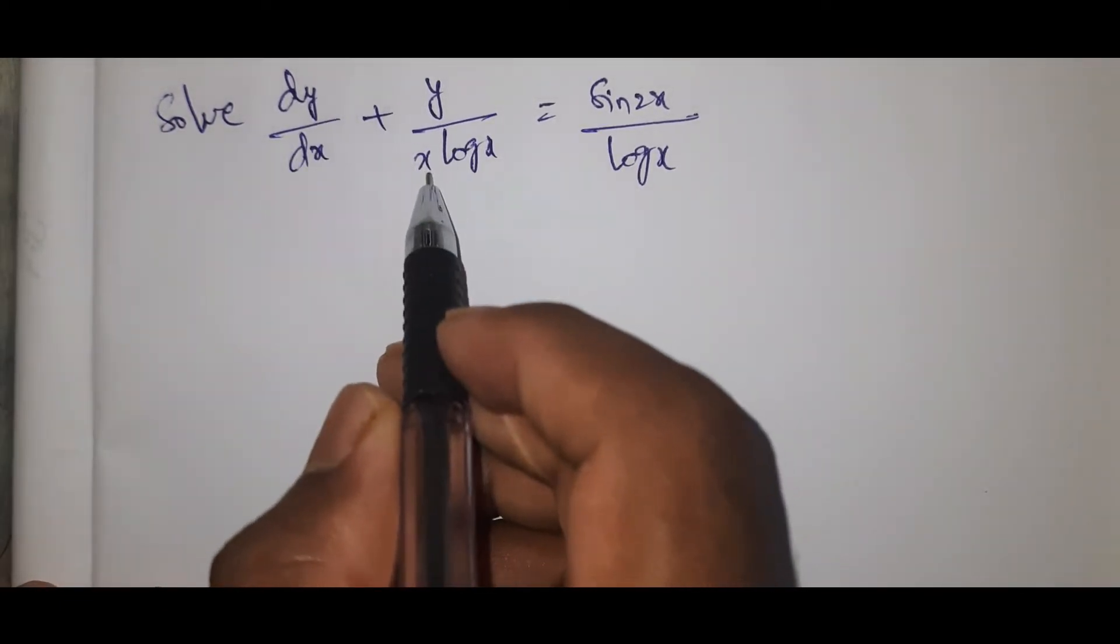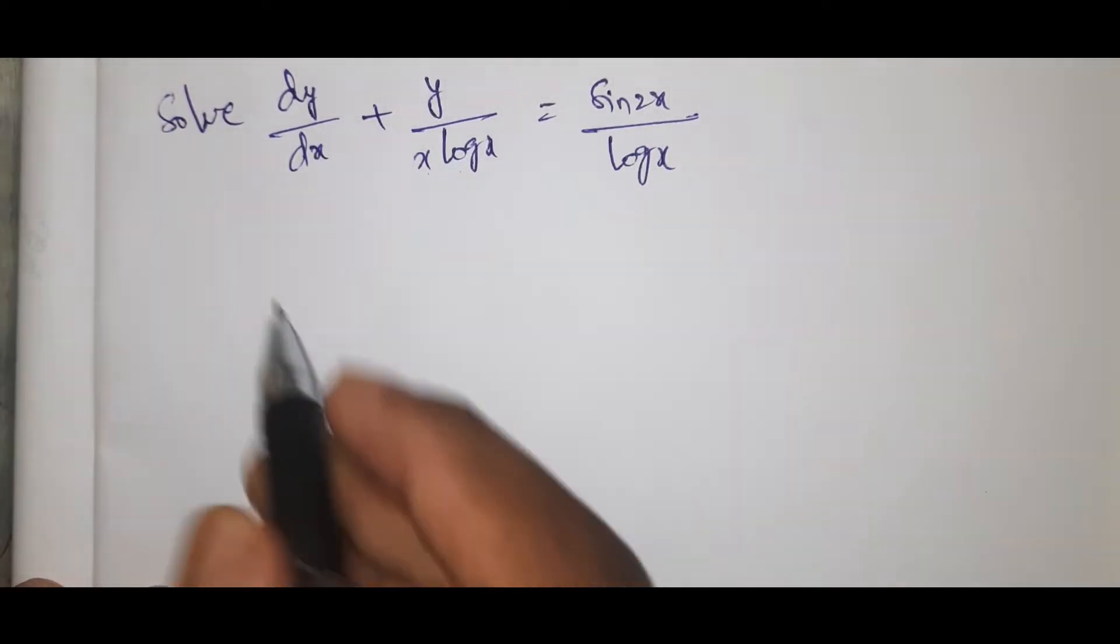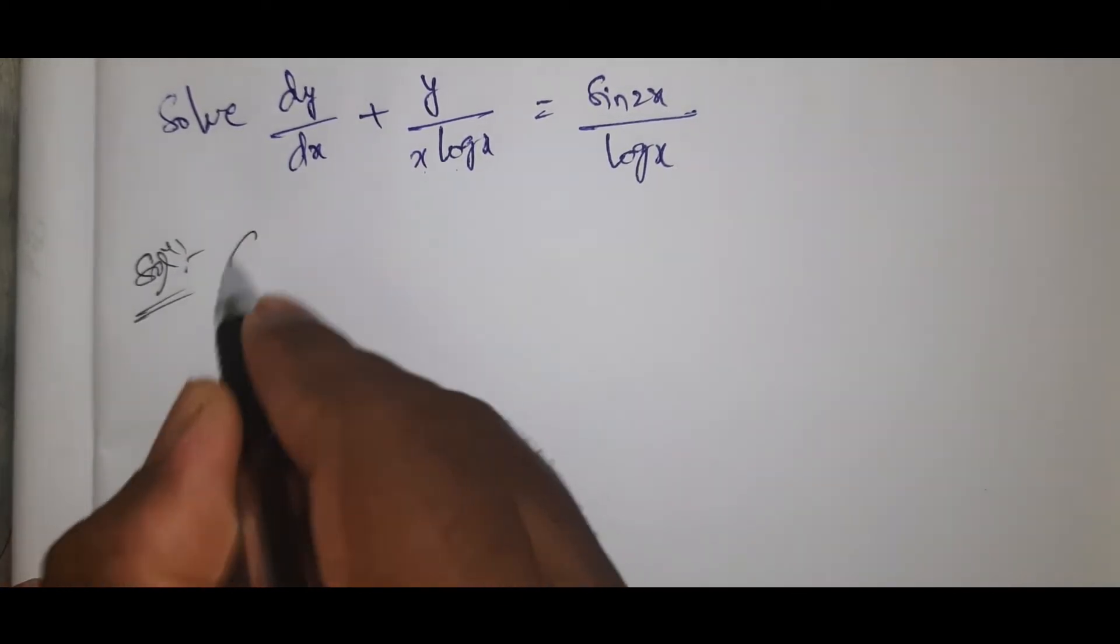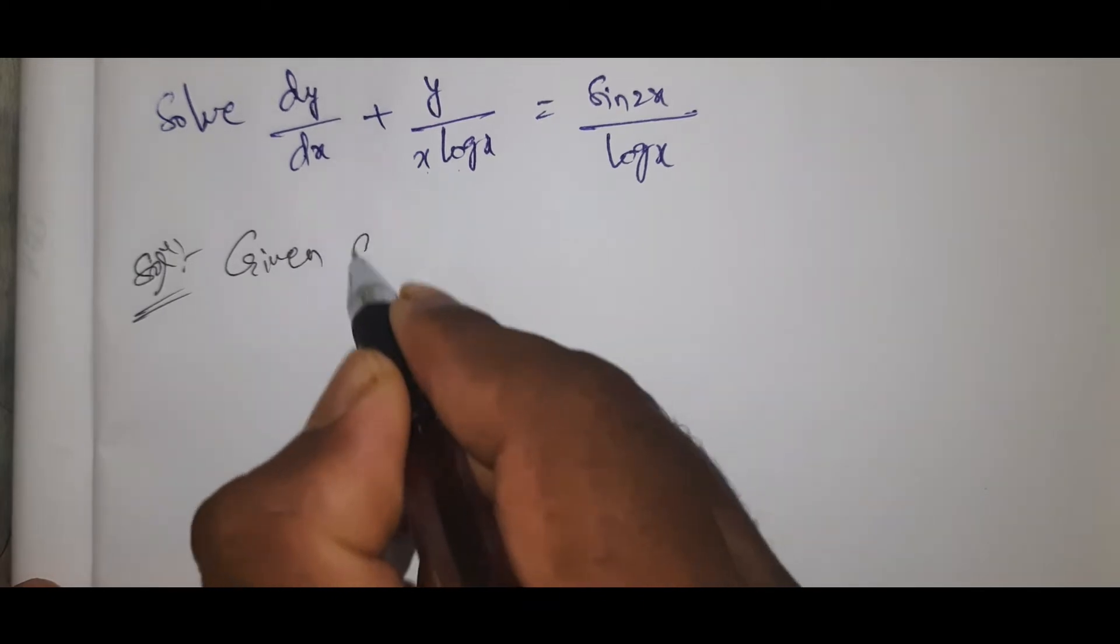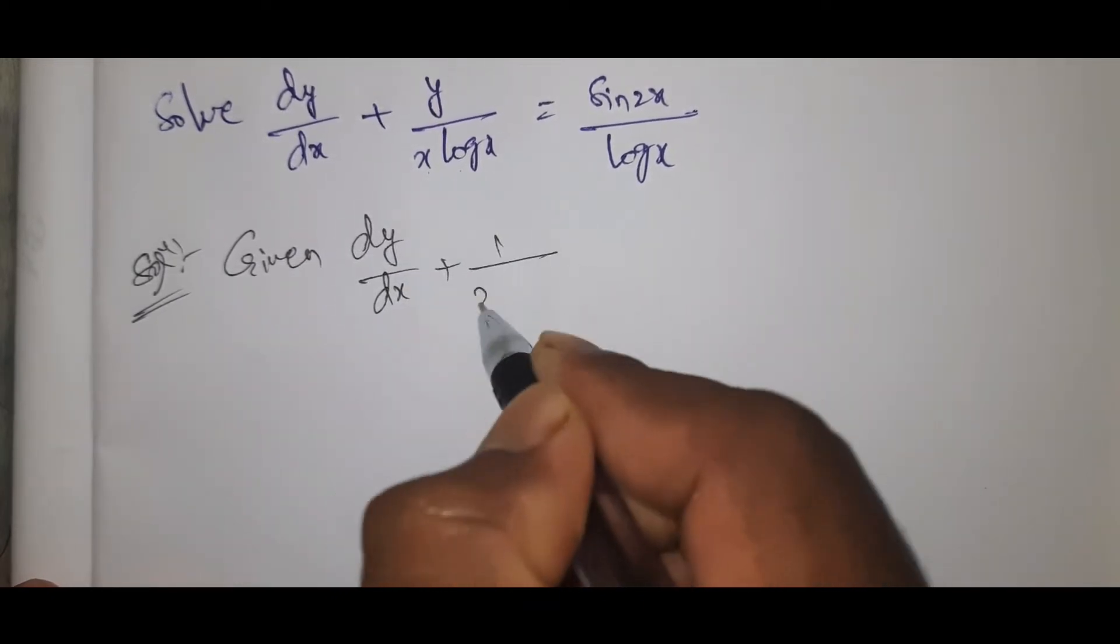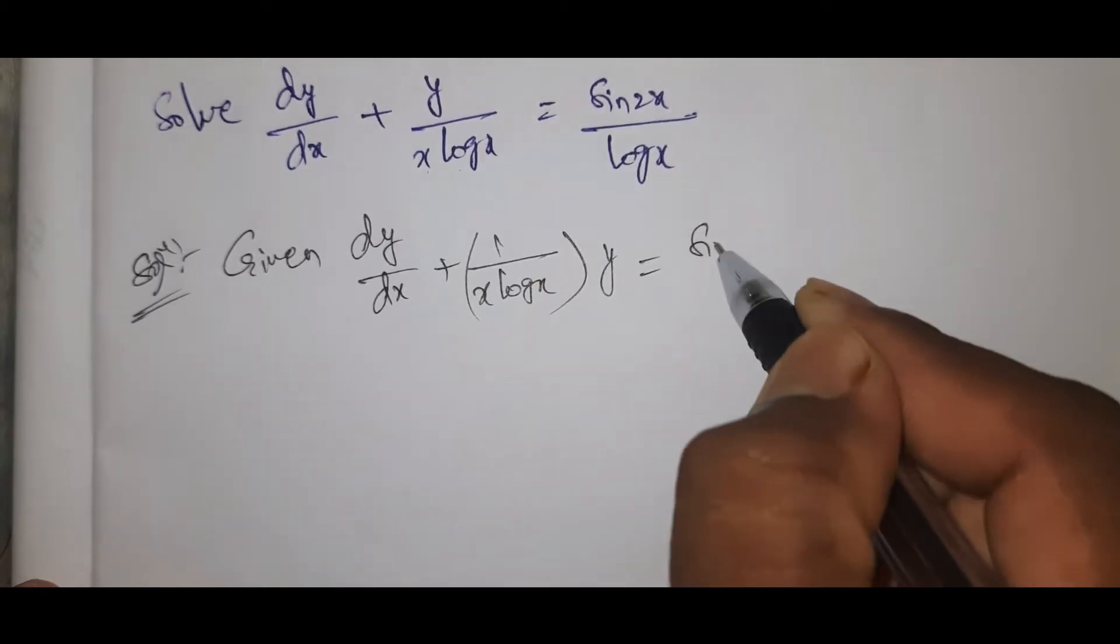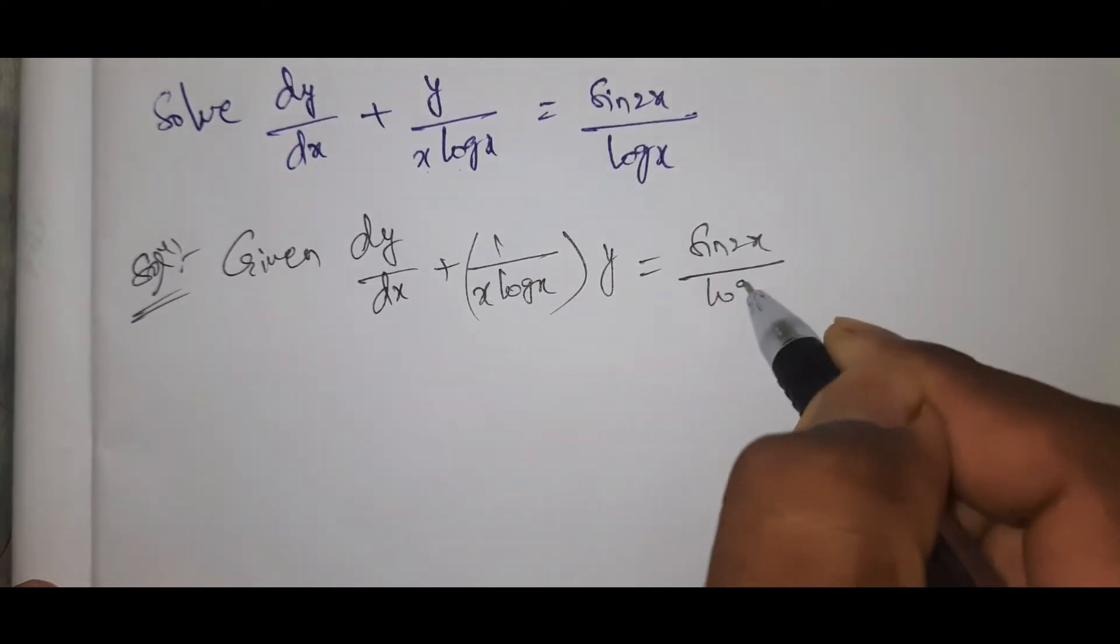Solve dy by dx plus y by x log x equals sin 2x by log x. This is the direct question. Given dy by dx plus 1 by x log x into y equals sin 2x by log x.